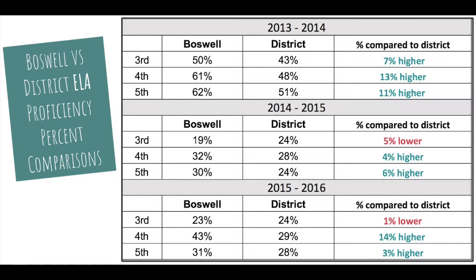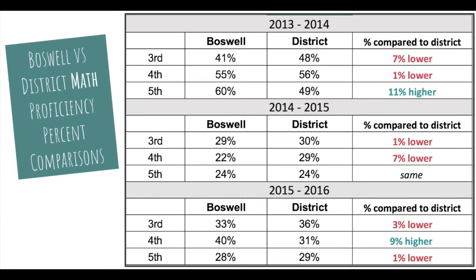Slides 9 and 10 use the same data but show the score difference as a comparison between the district and Boswell, making the visual information from slides 6-8 more concrete so the analyzer does not have to determine the actual difference in each area. Focus on the 2014-15 and 2015-16 data, as these are the most consistent years to compare. The 4th grade performance in ELA is the strongest for Boswell. Slide 10 covers math, and the most growth and strongest performance is again in 4th grade.